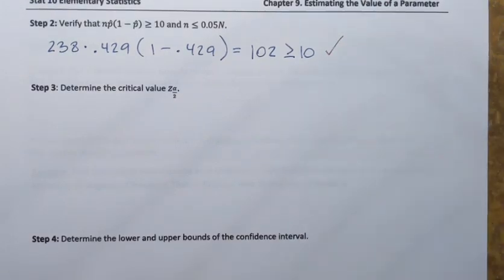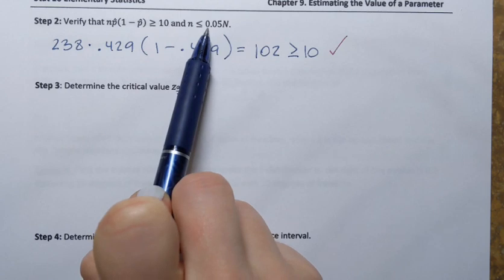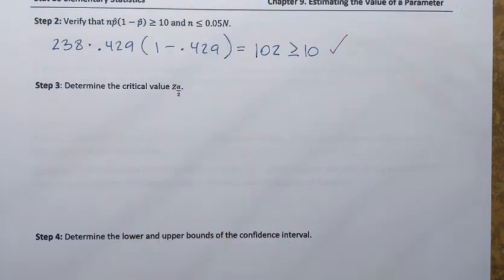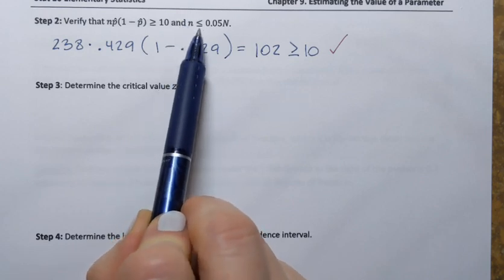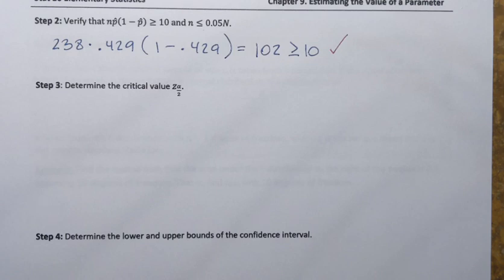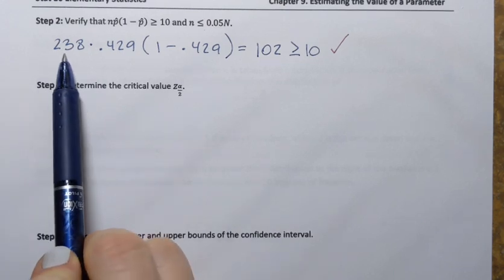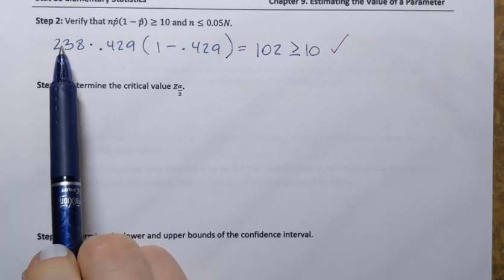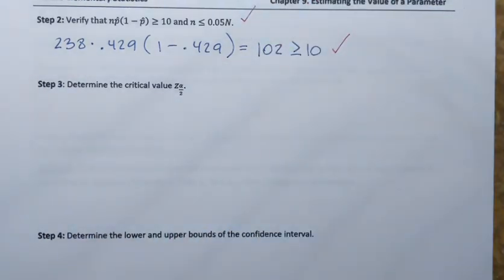The second condition is that the sample size n must be less than or equal to 0.05 times the population size N — meaning the sample size should be no more than five percent of the population. We're not given the population size, but using common sense: in this example the population represents all people aged 18 through 24 in the nation, and there are millions of people of that age. So 238 people is definitely less than or equal to five percent of the population. Since both conditions are satisfied, we can continue and use the normal distribution formula to obtain the interval.